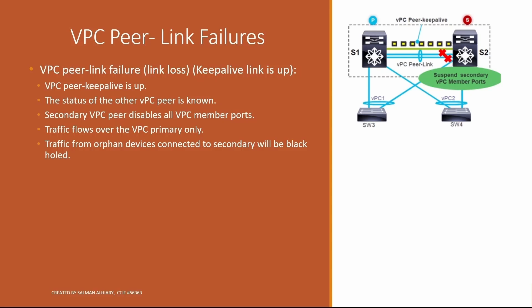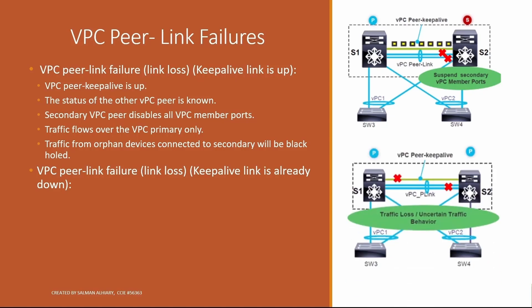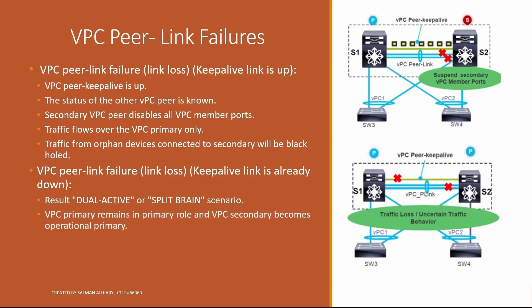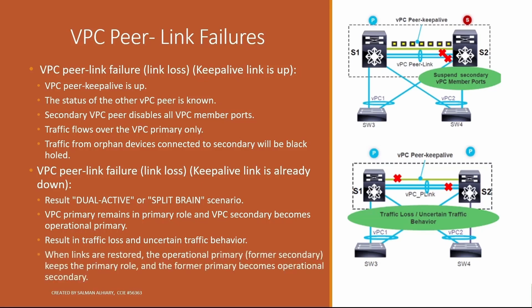Traffic from orphan devices connected to the secondary will be black-holed — this is important to consider, so avoid connecting orphan devices to the secondary peer. In the other case, where a VPC peer link fails and the keep-alive is already down, the result is dual active or split brain — a very bad scenario. The VPC primary remains primary and the VPC secondary becomes an operational primary, resulting in traffic loss and uncertain traffic behavior. When links are restored, the former secondary keeps the primary role and the former primary becomes operational secondary.